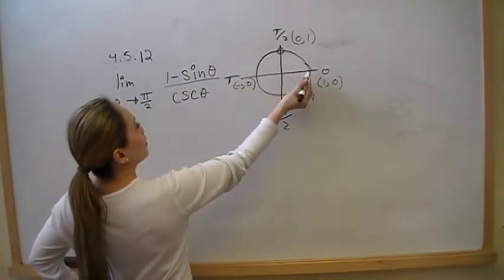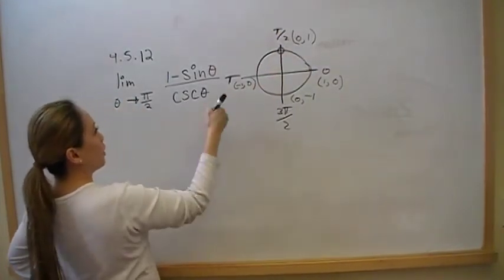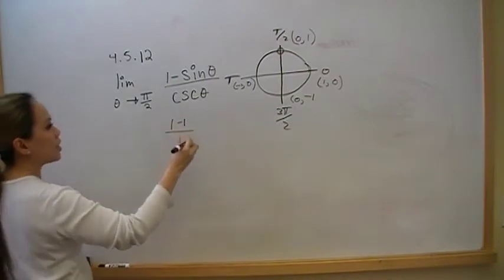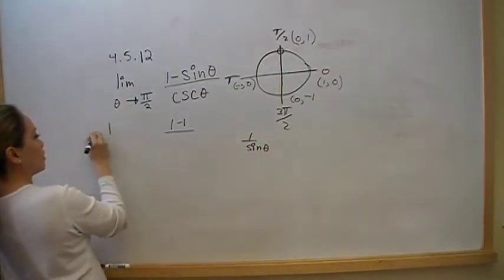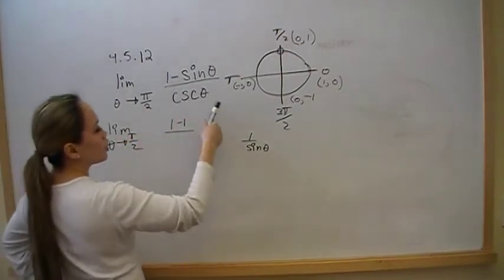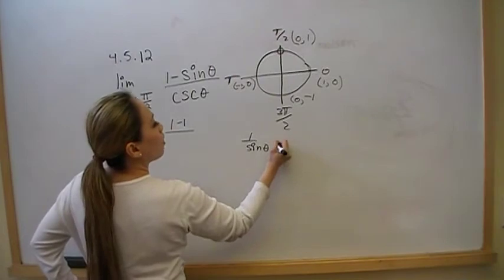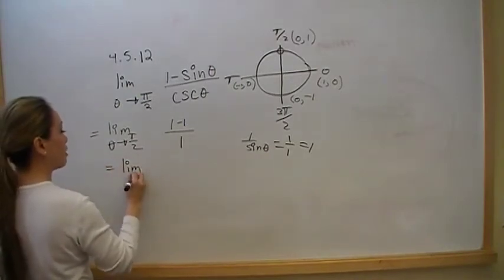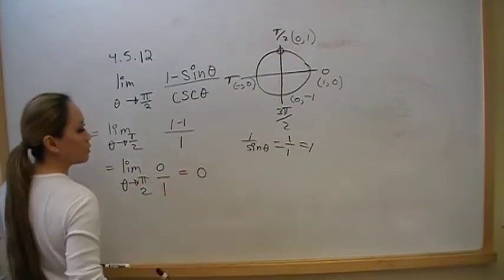As we get closer to pi over 2, we see that sine is going to approach the value of 1, so we have 1 minus 1 on the top. And we know that cosecant is 1 over sine of theta. So this limit as theta approaches pi over 2 is going to be 0 over 1, which is equal to 0.